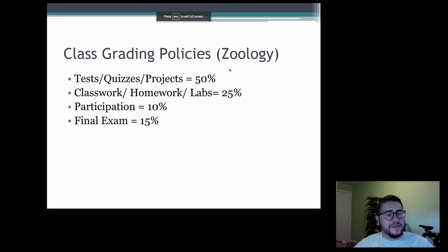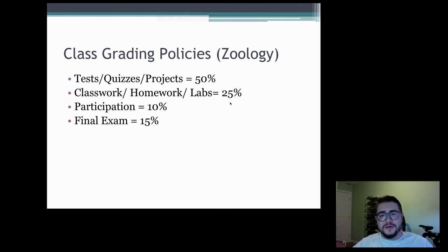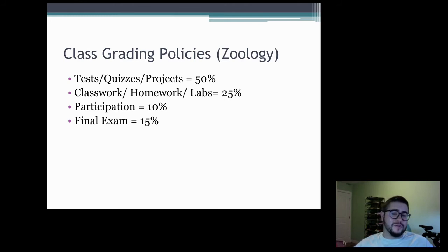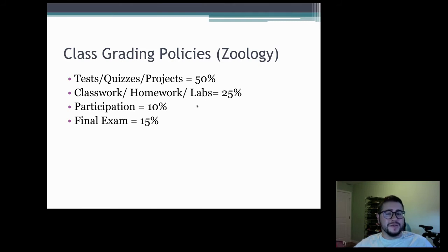A little bit of nuts and bolts for this class — here's how it's graded: 50% is tests, quizzes, and major projects; 25% is classwork, homework, and labs; participation is 10%; and their final exam is 15% of their grade.